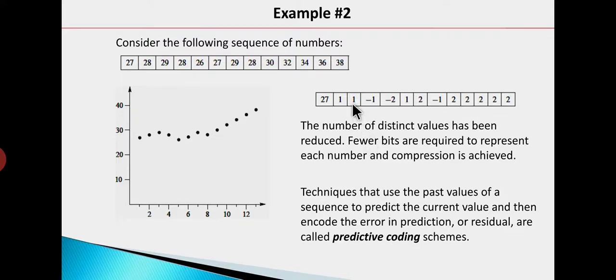Instead of storing this sequence, we store the difference sequence. To decode and reconstruct: first number is 27; 27 plus 1 is 28; 28 plus 1 is 29; 29 minus 1 is 28; 28 minus 2 is 26. So you can reconstruct the original sequence. We store the differences; decoding uses the previous value and the difference to predict and calculate the next value. These schemes are called predictive coding.